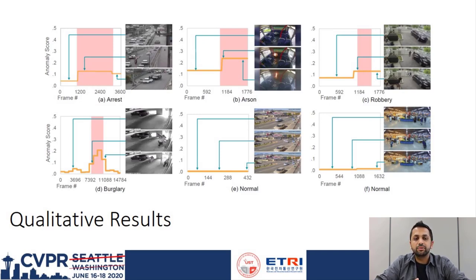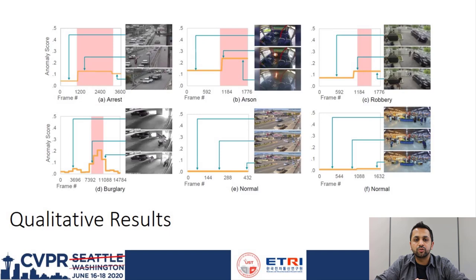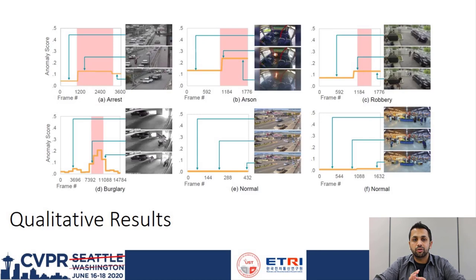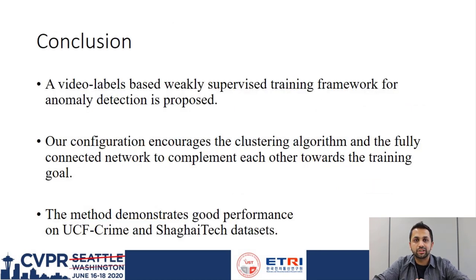However, in some cases, the score stays high even after the anomalous event is over. Upon visual inspection, we observed that in most of these cases, even if an abnormal event is over, the scene often does not return to normal right away. For example, in figure A, a car can be seen being chased by police vehicles. After the arrest is made, the cars are still parked on the road, hence the higher score.